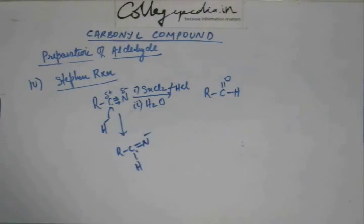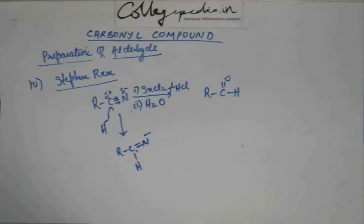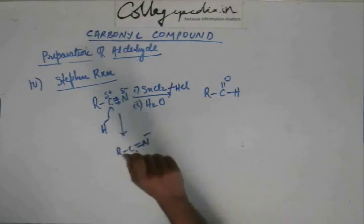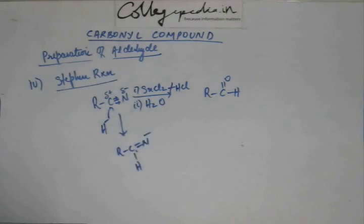When that bond is broken, the electronic density of that bond has to go somewhere, and that somewhere will be the orbital of nearby nitrogen. So this is what we are going to get — this is all that will happen.